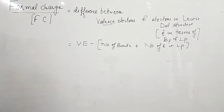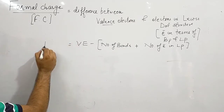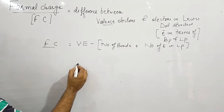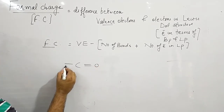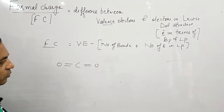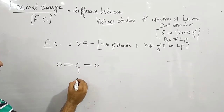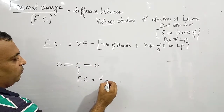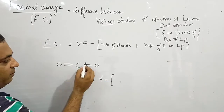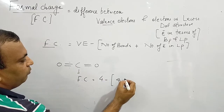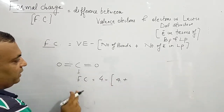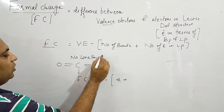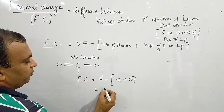Now let us calculate the formal charge. If we want to calculate the formal charge of carbon — formal charge of carbon is equal to: carbon has 4 valence electrons minus 4 bonds plus number of electrons in lone pair. Carbon has no lone pair, so 0. So the formal charge comes out to be 0.